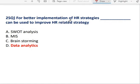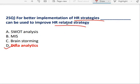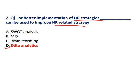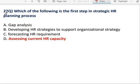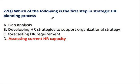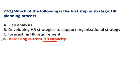Question No. 25: For better implementation of HR strategy, what can we use to improve the HR related strategy? Data analytics is used to improve the HR related strategy — हम data को analyze करते हैं, उसके according strategy में changes करते हैं या strategy form करते हैं. Question No. 26: Ratio and regression analysis is a part of which forecasting technique? It is a statistical tool. Question No. 27: Which of the following is the first step in strategic HR planning? Assessing the current HR capacity is the correct option — सबसे पहले हम current HR capacity देखते हैं, कितनी vacancy है.